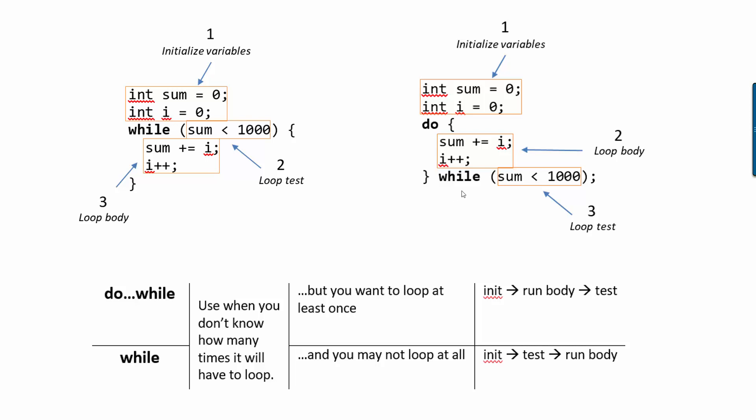For the do while loop, it's got the same ordering. The difference is that the test happens after you run the body. So we start by initializing the variables, then we run the body once, then we ask whether this statement is true. And if it's true, we go back and do the loop body again. So the difference is a while loop may never run the loop body even once, whereas a do while loop is guaranteed to run the loop body once, but then it might not run it a second time.